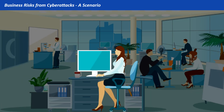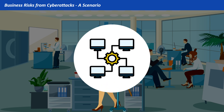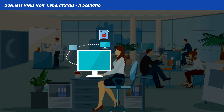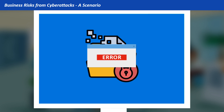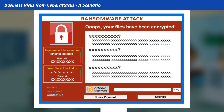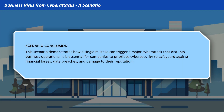The ransomware doesn't just affect Sarah's computer — it quickly spreads through the office's network, moving from device to device, encrypting files and disrupting important systems. Employees notice their computers becoming slow, files turning inaccessible, and strange error messages popping up. A ransom note appears on every infected computer, demanding a large payment in cryptocurrency. This scenario demonstrates how a single mistake can trigger a major cyber attack that disrupts business operations. It is essential for companies to prioritize cybersecurity to safeguard against financial losses, data breaches, and damage to their reputation.